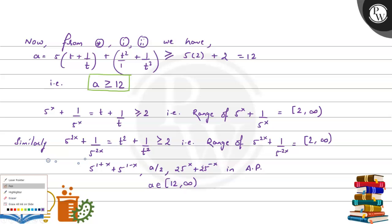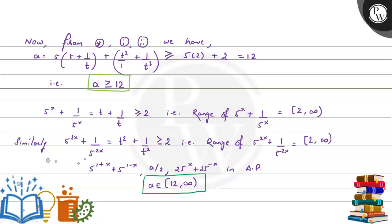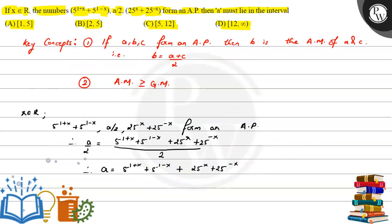So this is our final answer. Among the options, option D is the correct answer: the closed interval from 12 to infinity. I hope you understood it well. Thank you and best of luck.